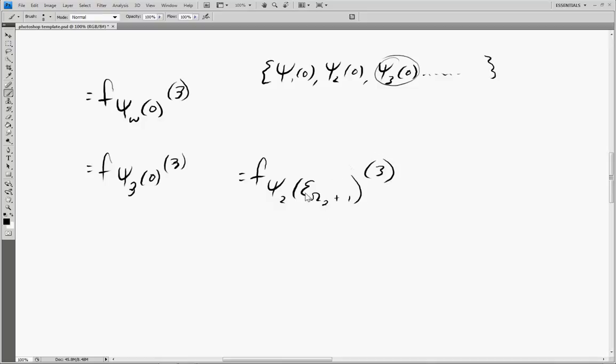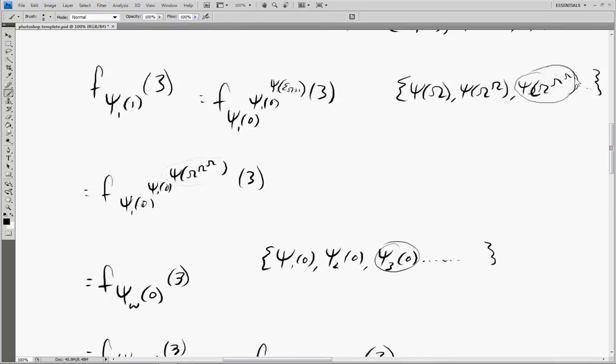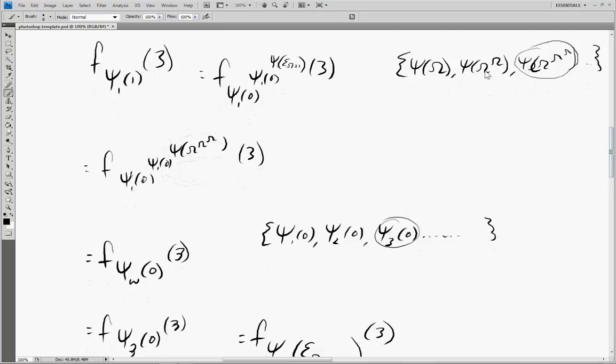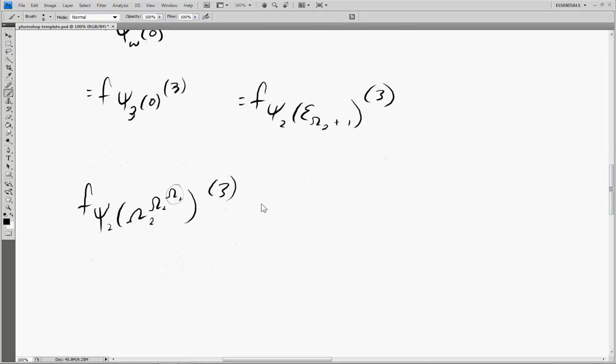And this diagonalizes in the same kind of way as this one up here. So you can imagine a fundamental sequence of increasing exponential powers of omega, and this would turn into f_ψ₂(ω₂^ω₂^ω₂), and then we can keep on going like this. We could define a fundamental sequence and then diagonalize this by plugging in previous entries.